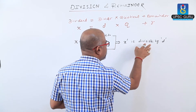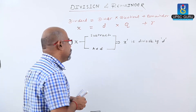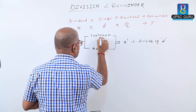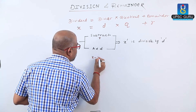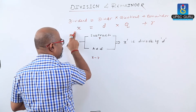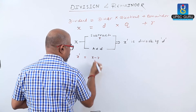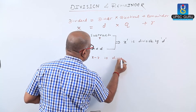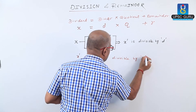The number we have to subtract is R. When we subtract R, the remainder, from the given number X, the new number X dash is divisible by the divisor D.